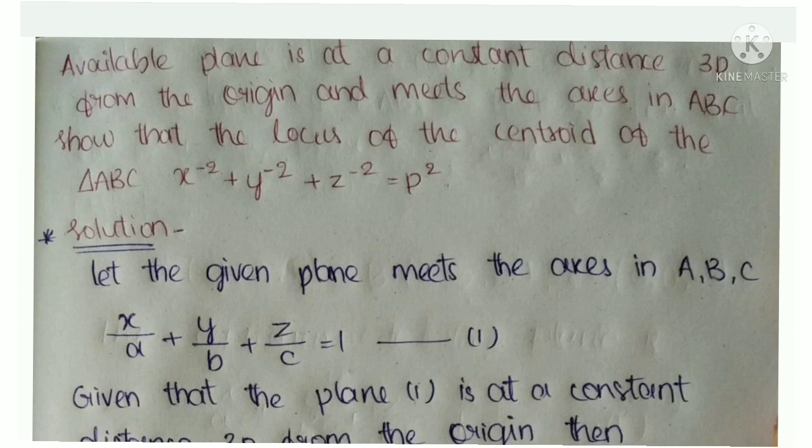This same question can appear in exams with 3p changed to 2p or 4p or any value. We need to find the centroid of triangle ABC and prove the given result.